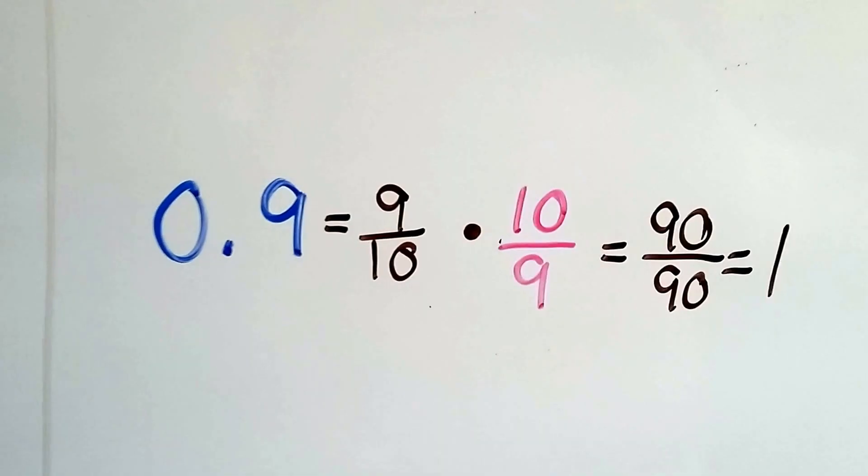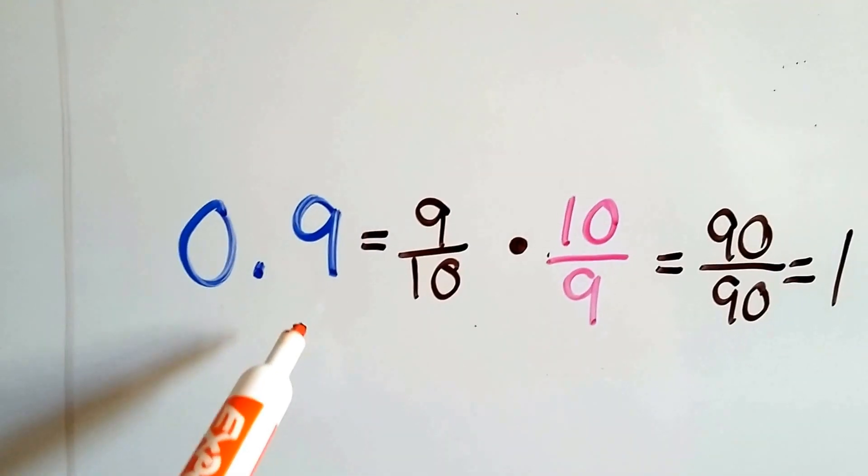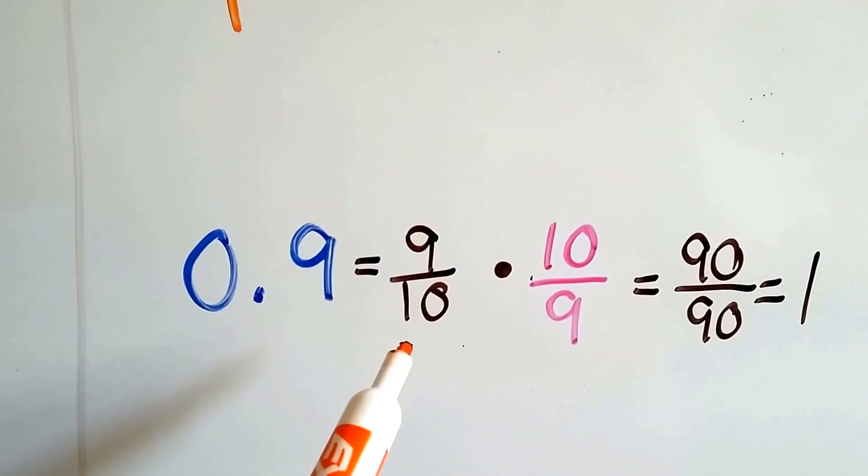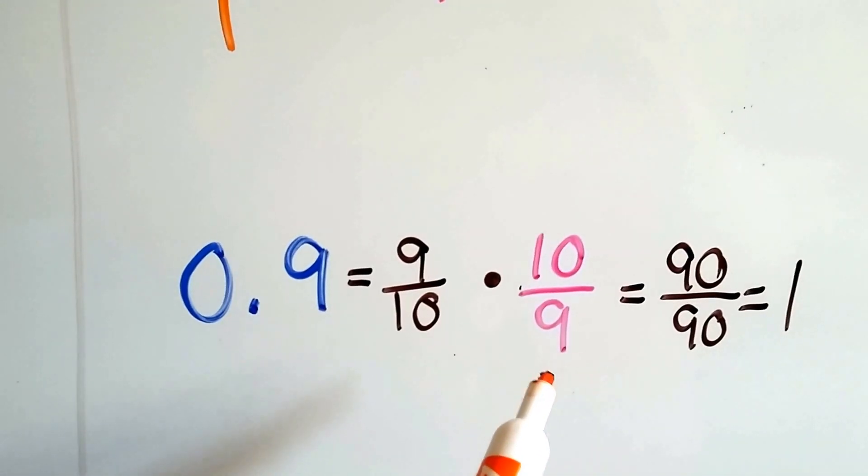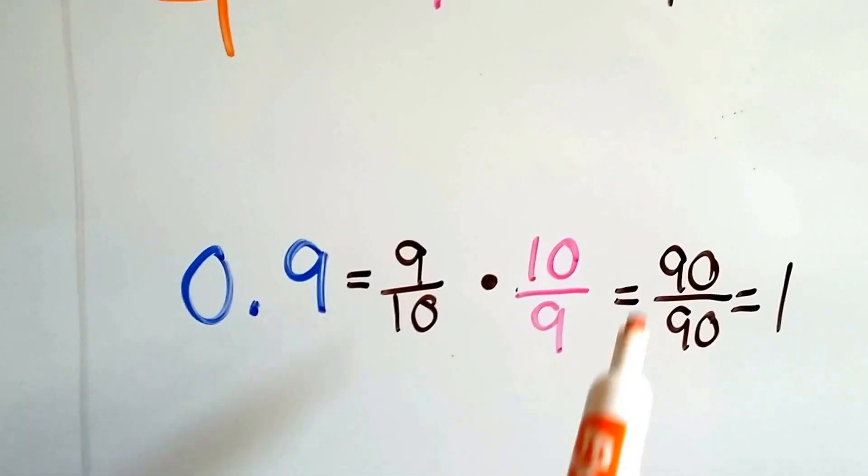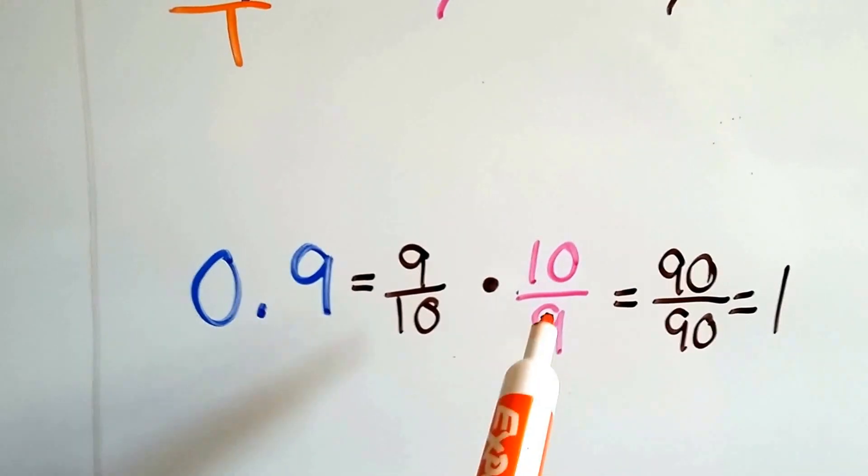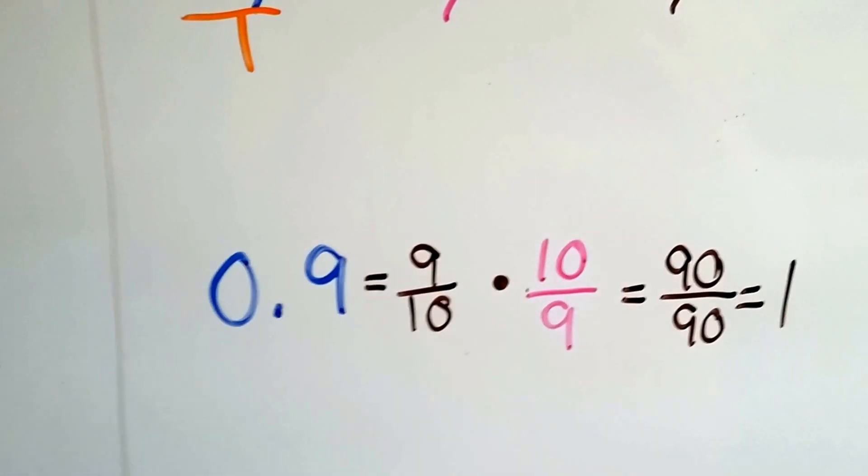What if you have .9? Well, remember, this is the tenths place. So we can rewrite it as a fraction as 9 tenths. Flip it around to 10 over 9. When we multiply straight across, 90 over 90 equals 1. So 10 ninths is the reciprocal of 9 tenths.